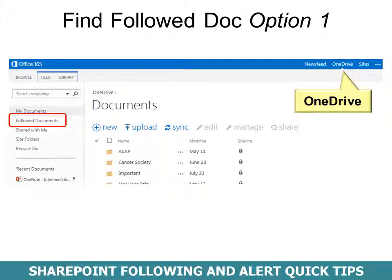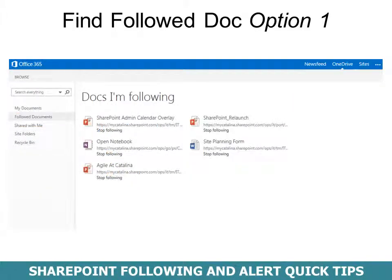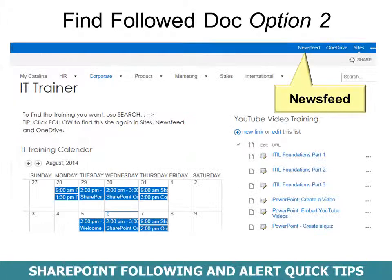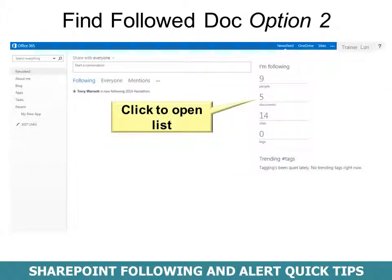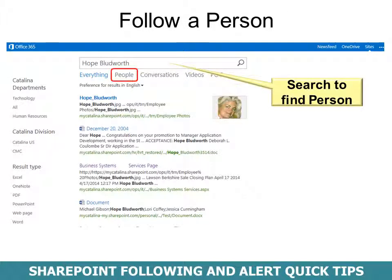To find that followed document, Option 1 is to go to OneDrive — we saw this earlier — and then you'll have an option for Followed Documents. Simply click the one you want to open it. Option 2 is to use the News Feed, which we saw earlier as well, and when you click in there it will show the list of documents.